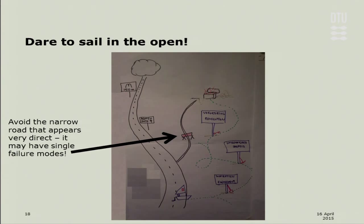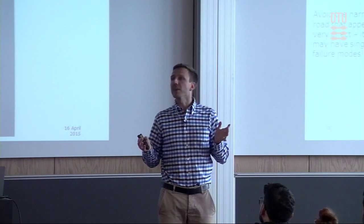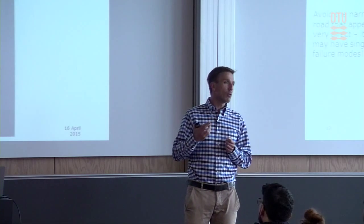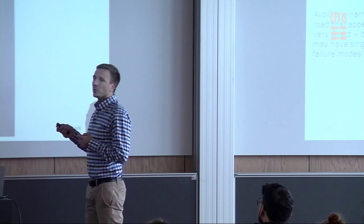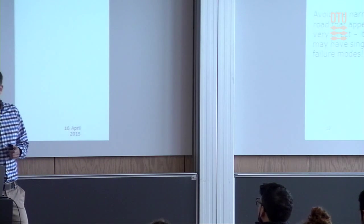There's also an option that may lure you in — the narrow road that appears very direct. Avoid it because it may have very single failure modes. If you do only one experiment that nobody has done before, and in five months — even though people with a PhD and 20 years of experience couldn't do it — you have a single mode of failure. Maybe something overlooked will stop you and you'll have nothing to fall back on, because it's the process that also gathers information for your results and writing.